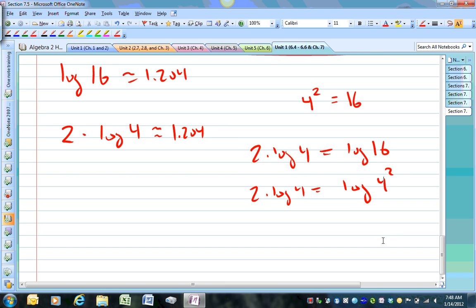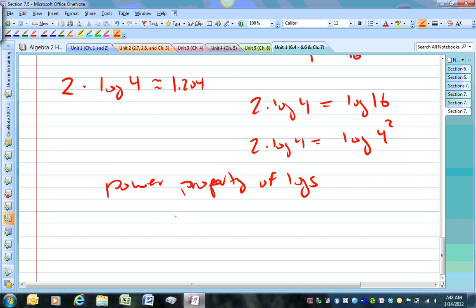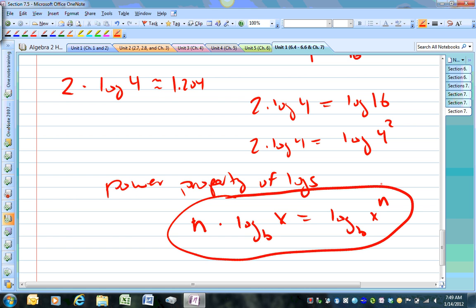So this brings me to the next property, the power property of logs. So, in this case, if you have a number, which I'll call n log of some base of x, it equals log base b of x to the n. So whenever you have a log of something raised to the power, you can roll that exponent to the front of the log. So it rolls along the log. No pun intended. But, yeah, that's what we have there. Or you can bring it back if you want to move the n to the front.